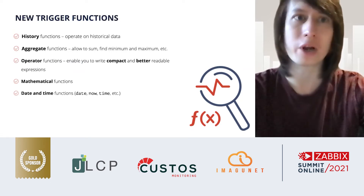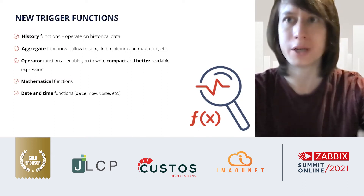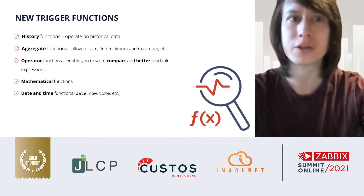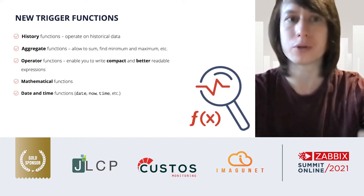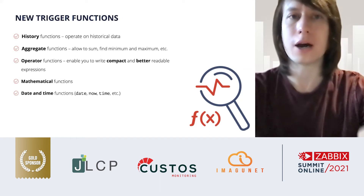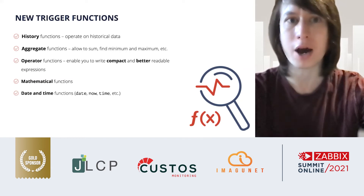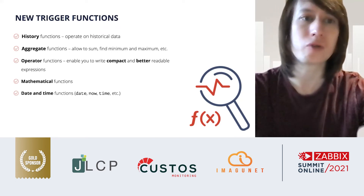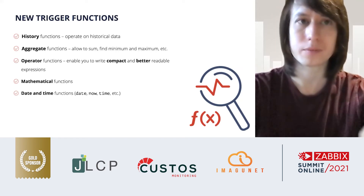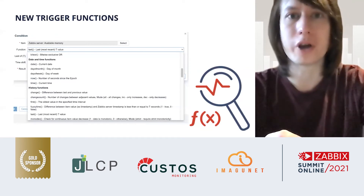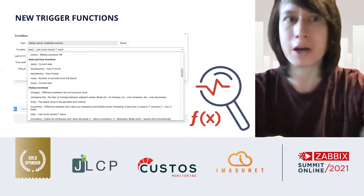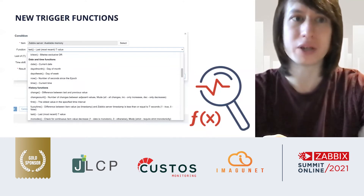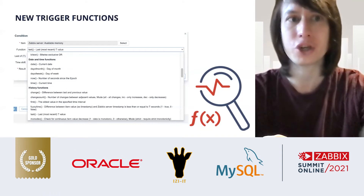Trigger functions have been organized into groups, which you can see in both the frontend and the documentation. We now have history functions, aggregate functions (which allow you to find maximum, minimum, sum, average values, and so on), operator functions that enable you to write compact and more readable expressions, mathematical functions, string functions, and date and time functions. In the trigger creation wizard, you can now navigate by group rather than scrolling through a long alphabetical list of all functions, making it easier to find what you need and learn the available options.